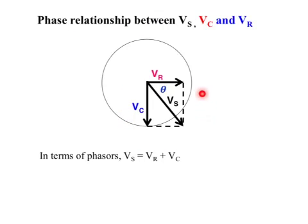This diagram is showing that the resistor voltage and the capacitor voltage add up to the supply voltage, voltage from the power supply.